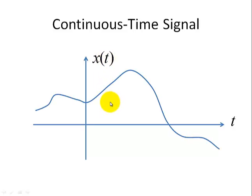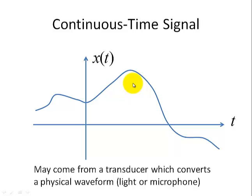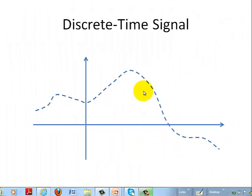Here we have an example of a continuous time signal whose amplitude or value varies continuously with time. This continuous time signal usually arises when a physical waveform, such as a signal coming from a microphone or from a light sensor — basically a transducer — converts this physical variable into an electrical waveform. Because X of T has an infinite number of values as a function of time, this is not suited for digital signal processing.